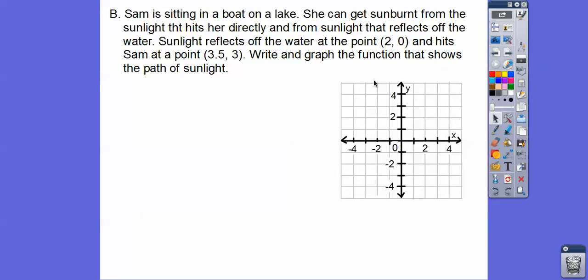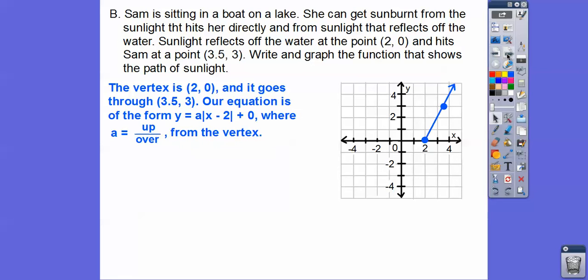So imagine the sun shining down here, and it reflects off that point right there, and it reflects back up here to that point right there. So it's going to be an absolute value graph. So the vertex of this is at that 2,0, and it goes through this 3.5,3. So remember that 2,0 is our h,k, so it's of the form of here's h,k. Here's the 2,0 right there. So our equation is going to be y equals a times x minus, and we'll just do x minus 2, the absolute value of that.